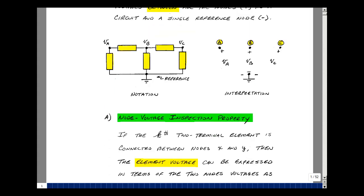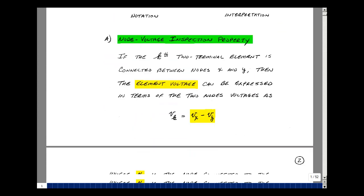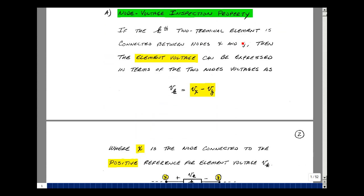Let me next state the node voltage inspection property. If the kth two-terminal element is connected between nodes X and Y, then the element voltage can be expressed in terms of the two node voltages as the following. The voltage across the kth element will be equal to V sub X minus V sub Y, where X is the node connected to the positive reference for the element V sub K.